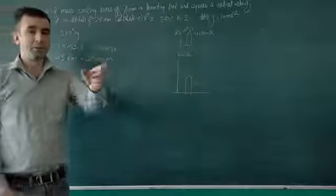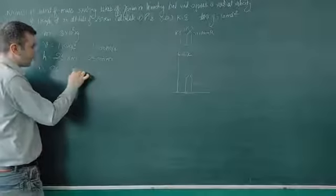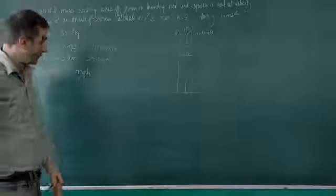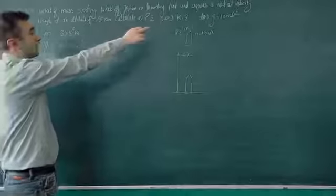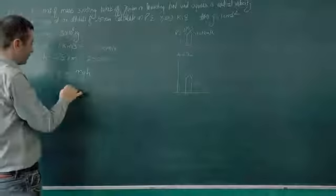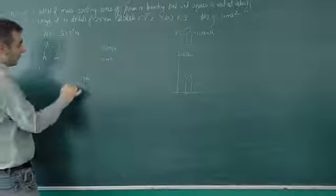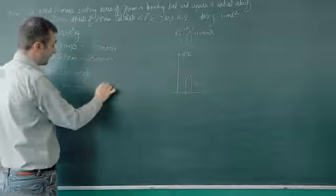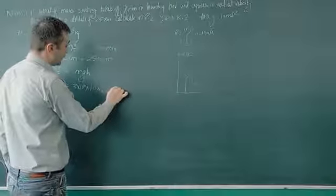Potential energy is MGH. So MGH, where G is 10 meters per second squared. Mass is 3 times 10 to the power 6. G is 10. Height is 25,000.